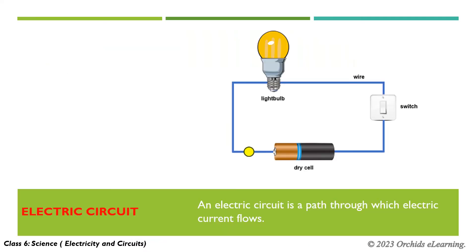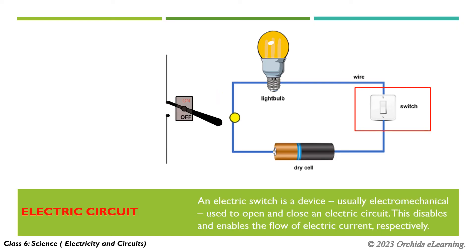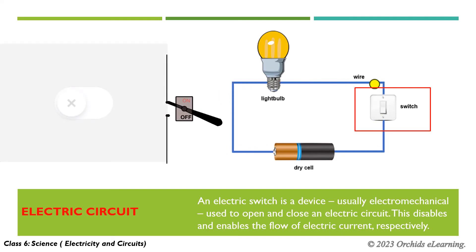An electric circuit is a path through which electric current flows. An electric switch is a device, usually electromechanical, used to open and close an electric circuit. This disables and enables the flow of electric current respectively.